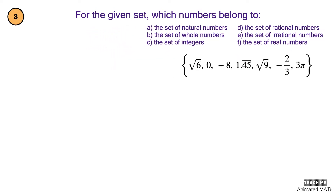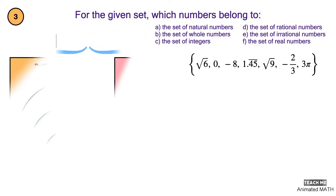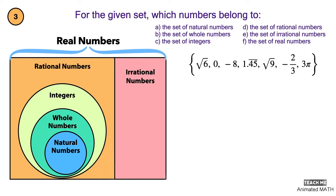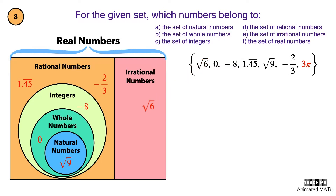Like we did in problem 2, let's take the numbers from the given set and place them on the Venn diagram. Square root of 9 is equal to 3, so it is a natural number. 0 is a whole number. Negative 8 is an integer. 1.45 repeating is a rational number. Negative 2 over 3 is also rational. Square root of 6 is an irrational number. 3 pi is also irrational.